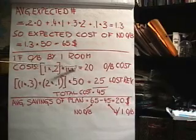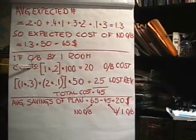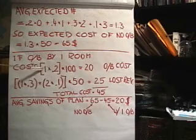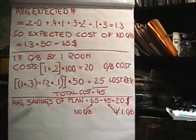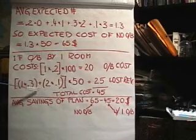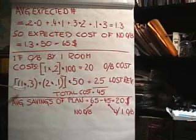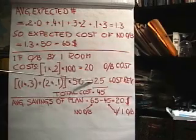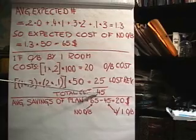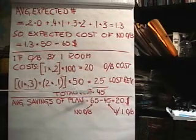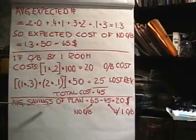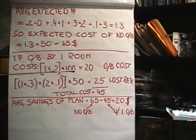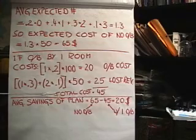To summarize: we decided to overbook by one. We had zero no-shows with 20% probability, incurring a cost of one overbooked room. We also had expected lost revenue of $25. Total cost of the overbooking plan is $45. Taking the difference between $65 (no overbooking) and $45 (overbook by one), the average savings per night is $20 if we overbook by one. That's the optimal plan in this example: overbook by one.